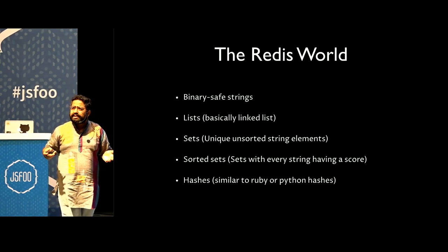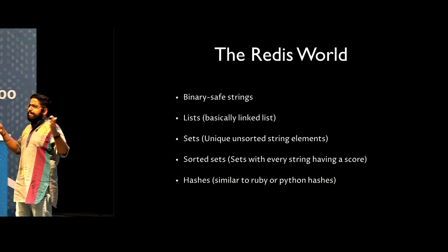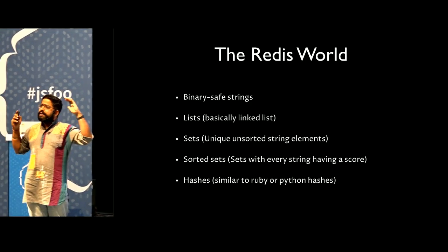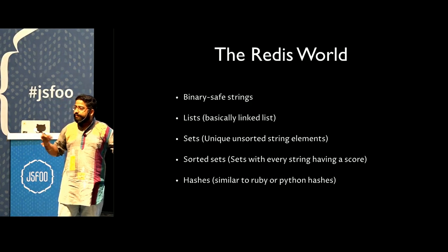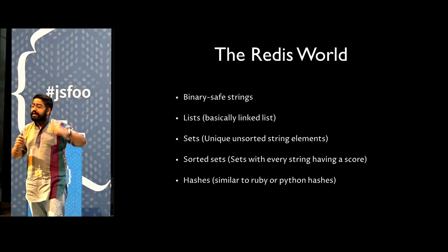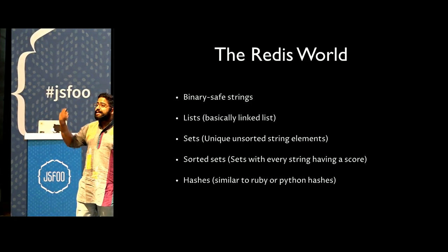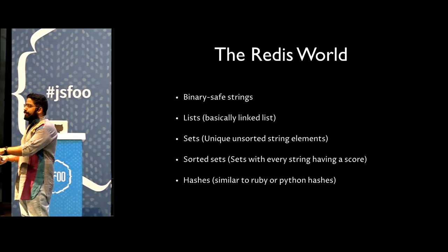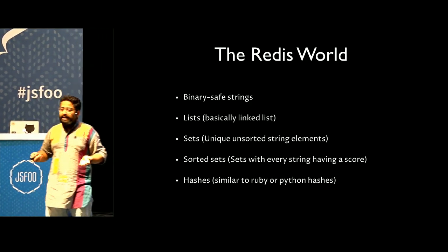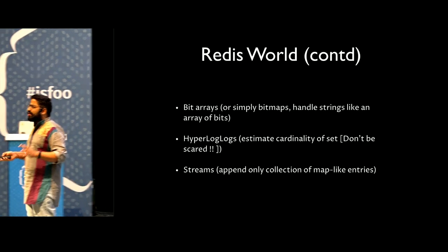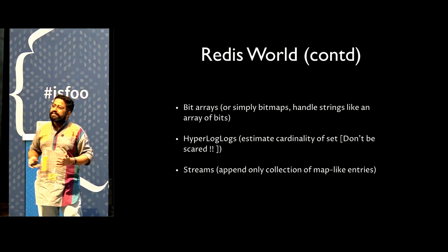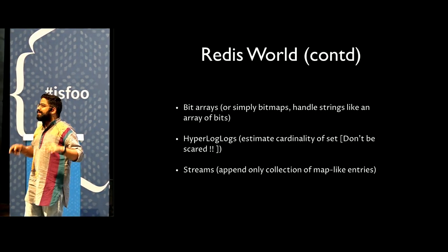Lists are basically linked lists ordered according to insertion order. Sets are completely unordered sets of data. Then there are sorted sets - an amazing thing, just like sets but each element is given a weight, which means it can be used in a leaderboard. If somebody is on the 10th position and you want to bring them to the second position, you track all of that in a sorted set. And of course there are hashes - one of the most common key-value pair structures, very commonly used in Node, Ruby, and Python worlds.